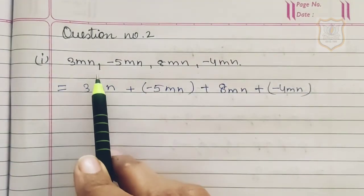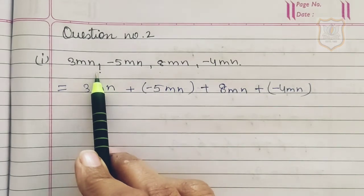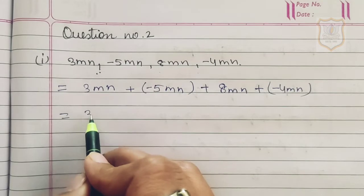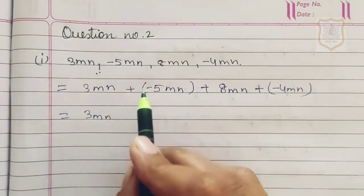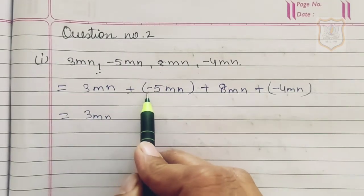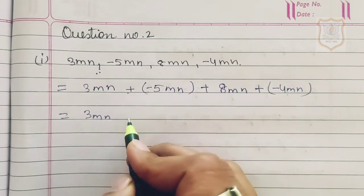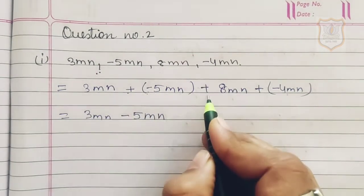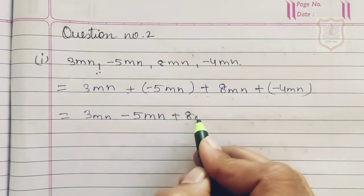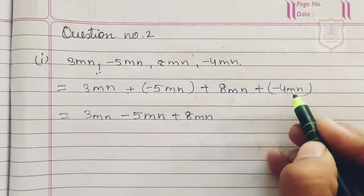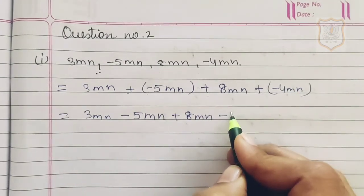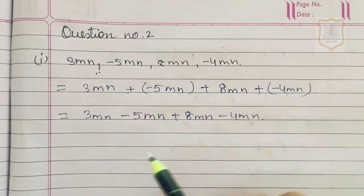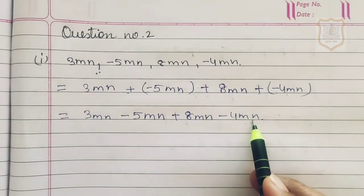Here you can see all these terms are like terms. We write 3mn as it is. Plus minus becomes minus, so we write minus 5mn, then plus 8mn, then plus minus becomes minus 4mn. All these terms are like terms.